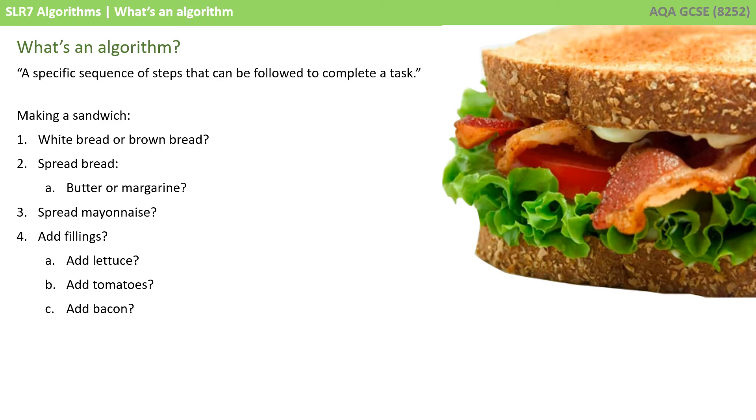An algorithm is just a specific sequence of steps and instructions that are written, which can then be followed to complete a task in computer science.